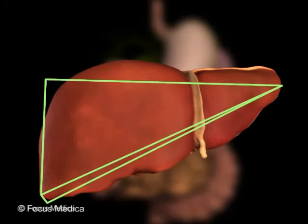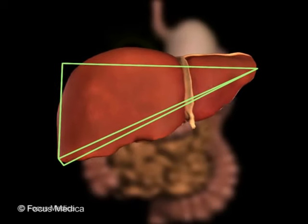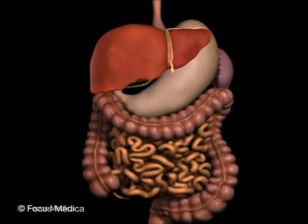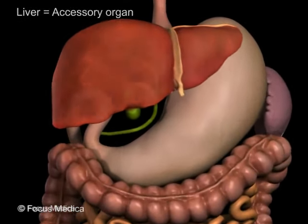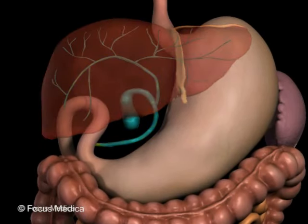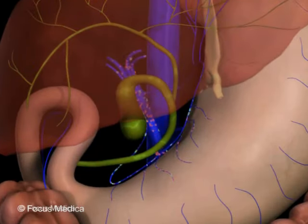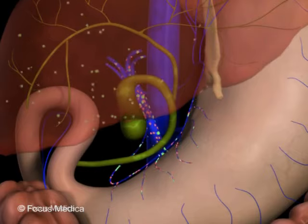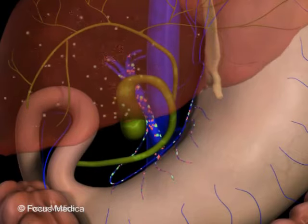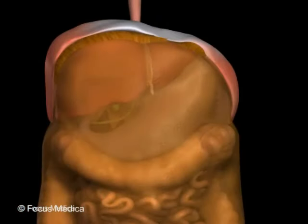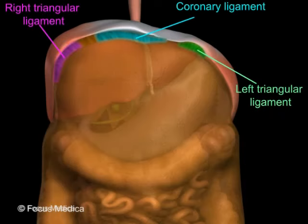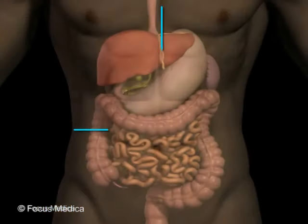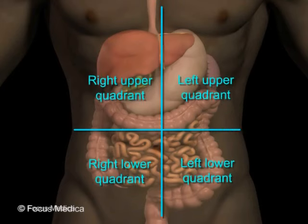The liver is a large wedge-shaped vital organ in the abdomen, closely associated with the digestive tract, and hence classified as an accessory organ of the gastrointestinal tract. Its principal secretion is bile, and it is a metabolic filter for incoming portal blood, besides having several other functions. It is located below the diaphragm, suspended from it by peritoneal ligaments, and occupies the upper abdomen mainly in the right quadrant.